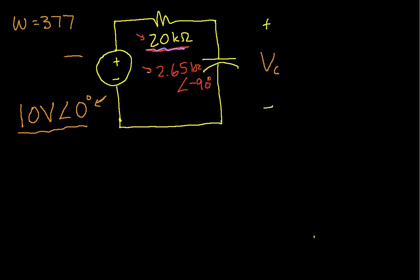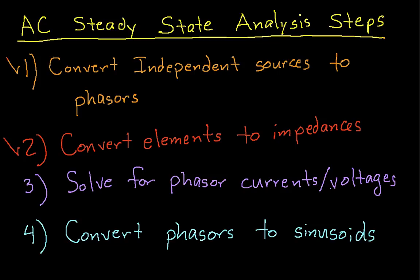So with that, we can now go look at our steps. We've got independent sources to phasors, elements to impedances. The next step is solving for phasor currents and voltages. So let's try to do that.